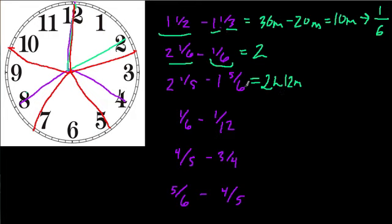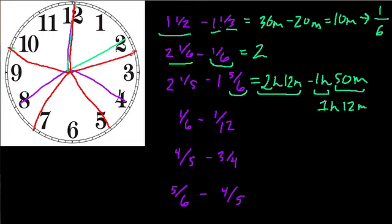And then we have minus an hour and 5/6. Well, 5/6 is equal to what? 1/6 is 10 minutes, so 5/6 is 50 minutes. So it's minus 1 hour and 50 minutes. Now this looks nasty. We can deal with it. 2 hours, 12 minutes, minus an hour. Break this apart a little bit. It gives me 1 hour and 12 minutes.